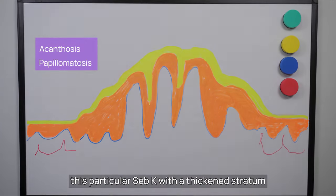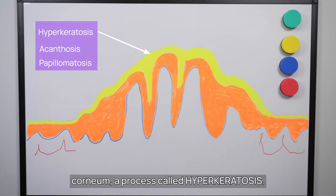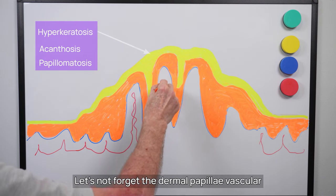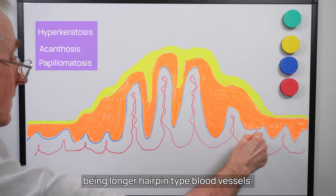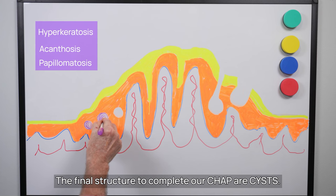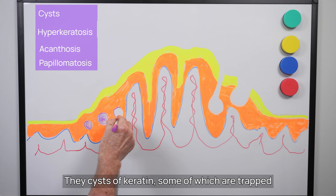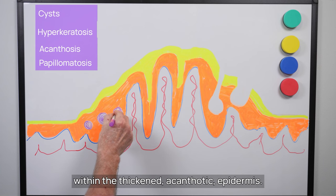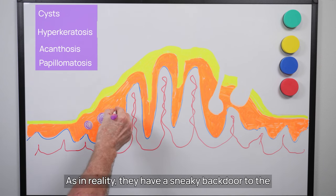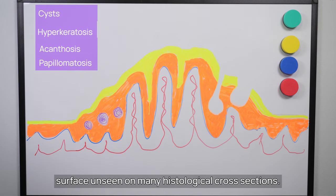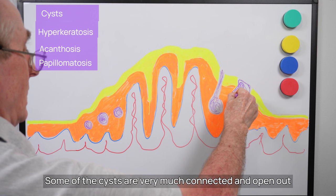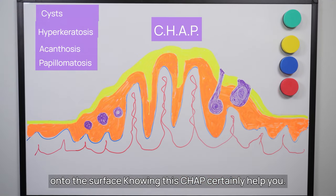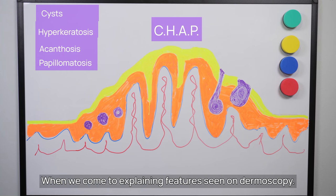Sometimes a Seb K also develops a hard cap with a thickened stratum corneum — a process called hyperkeratosis. Let's not forget the dermal papillae vascular plexus, which grows with the papillae forming longer hairpin-type blood vessels. The final structure to complete our CHAP are cysts — cysts of keratin, some of which are trapped within the thickened acanthotic epidermis. Many are actually pseudocysts, as in reality they have a sneaky back door to the surface unseen on many histological cross-sections. Some cysts are very much connected and open out onto the surface.